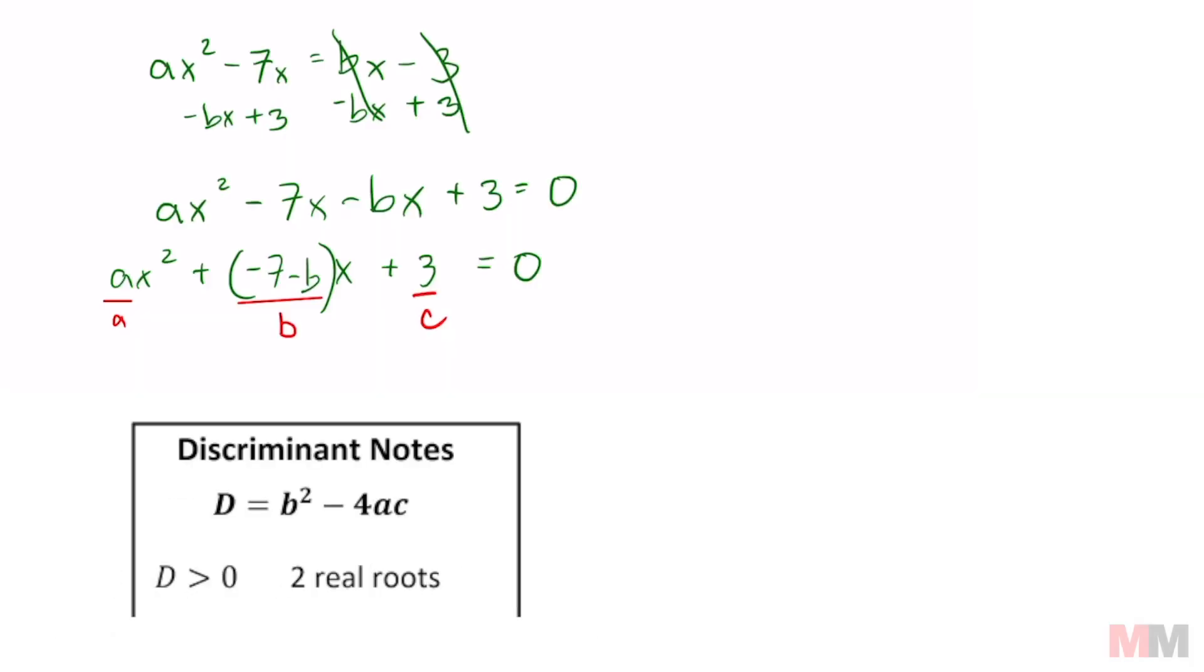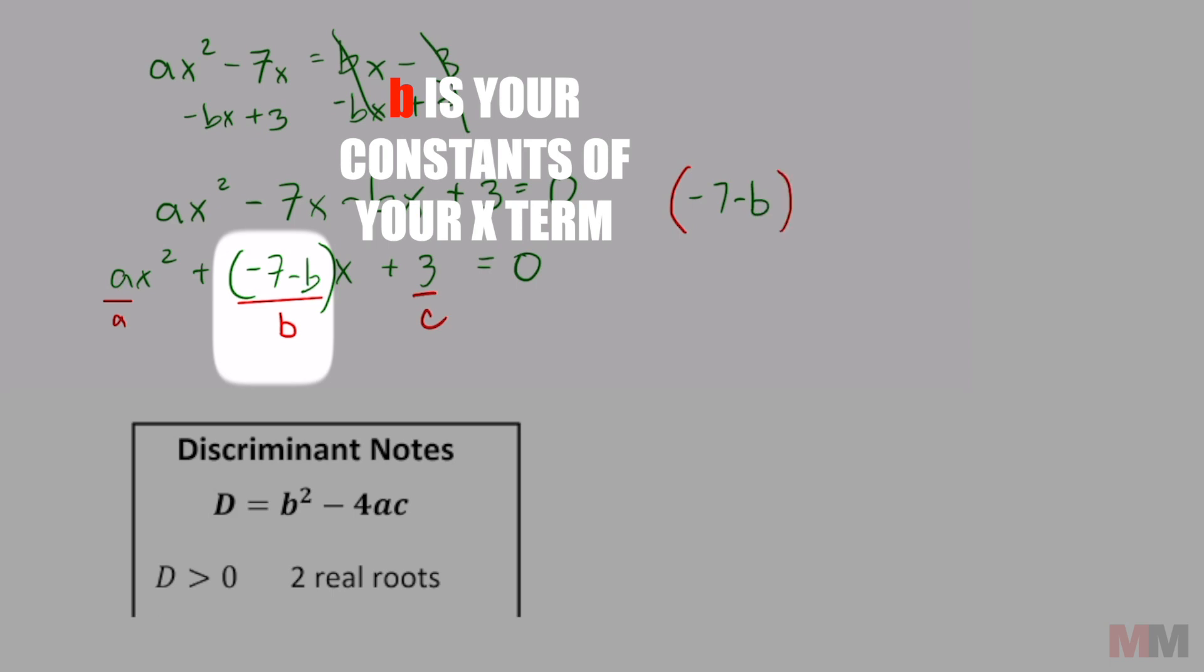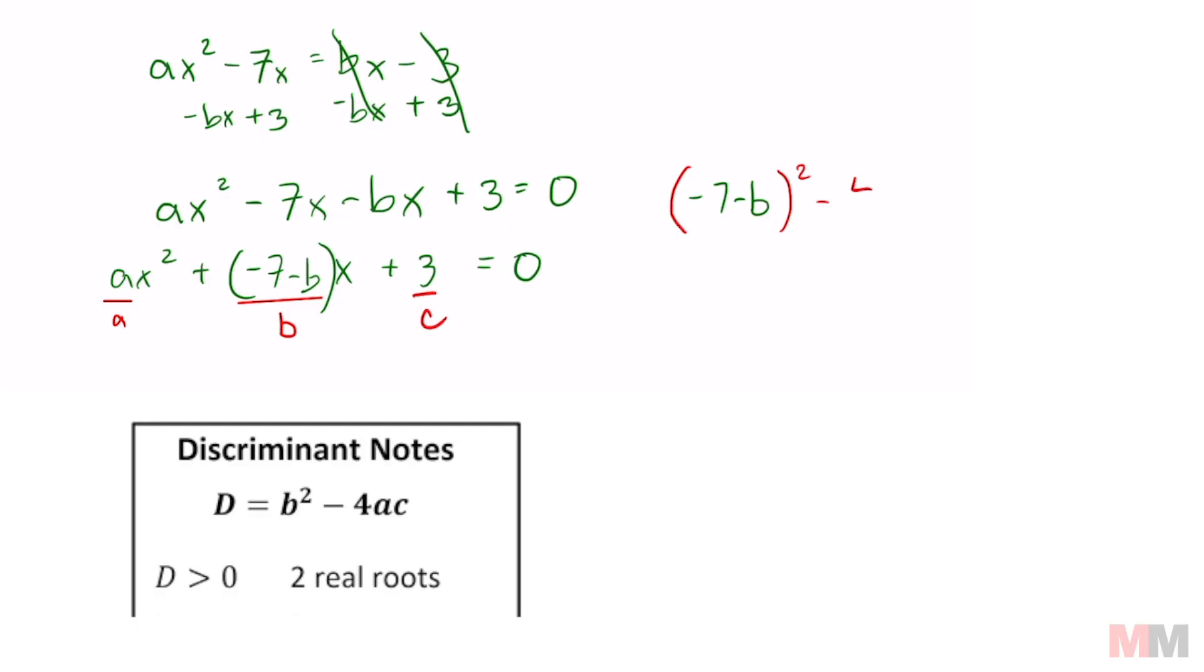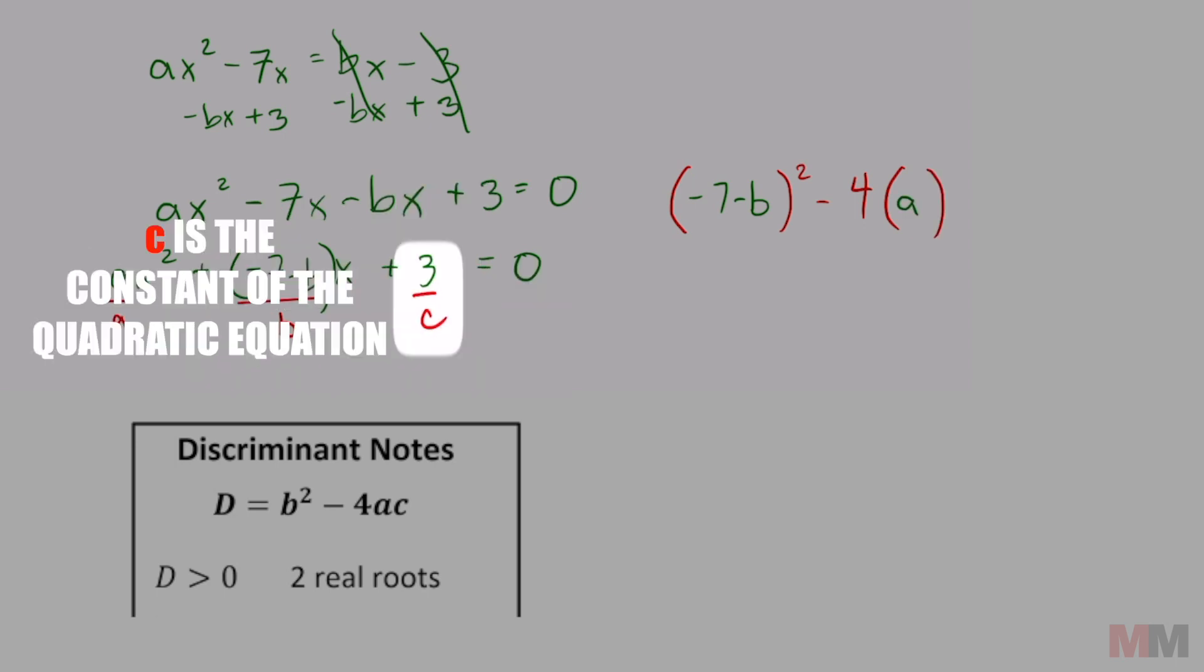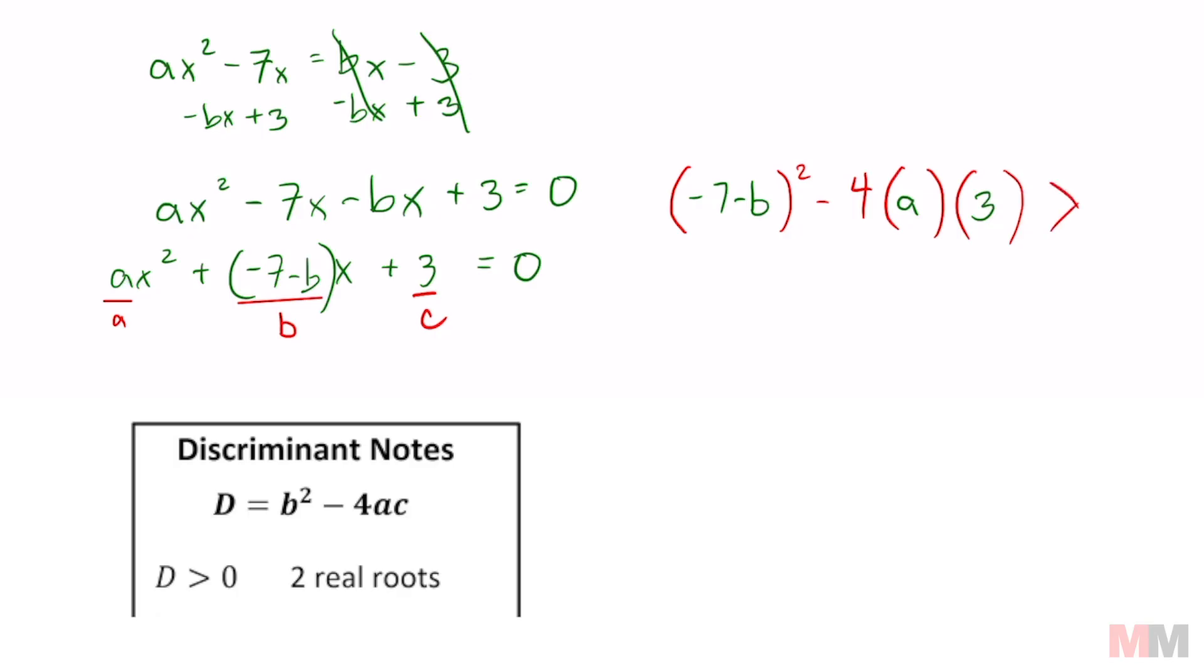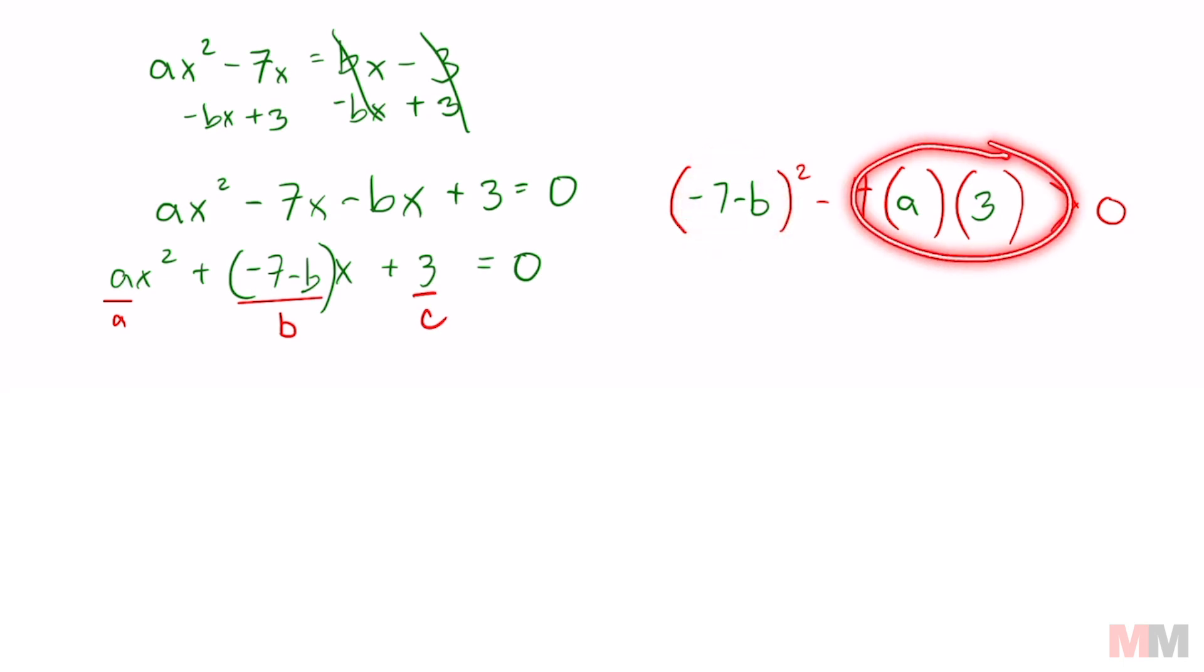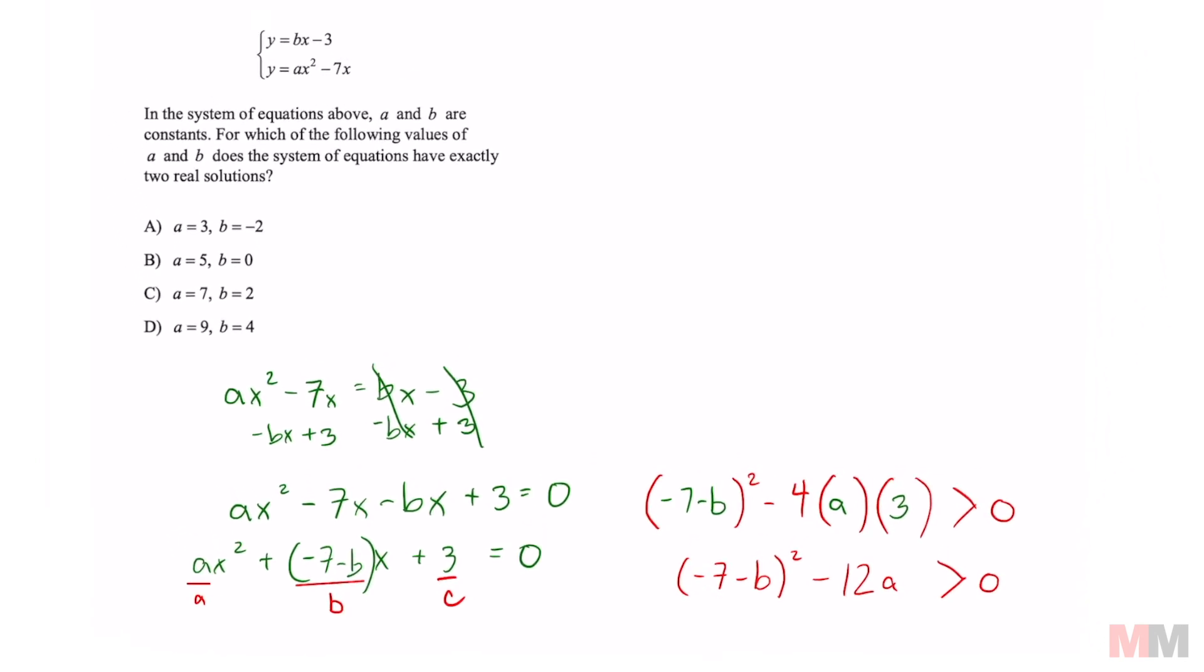Let's substitute my a, b, and c to the discriminant formula. Starts off with b squared. So my b is negative 7 minus b squared minus 4 times my a is just a, and my c is 3. And all of that has to be greater than 0 in order for this to have two real solutions. I think it's just going to be a lot faster if we don't distribute that out. But over here, we can multiply 4 times 3. Might as well. 12a, that has to be greater than 0. So that is the key part of this problem.